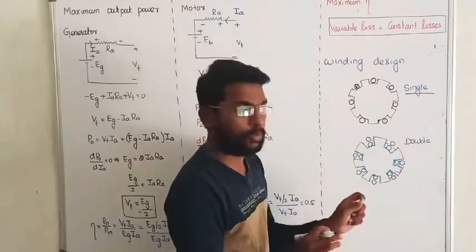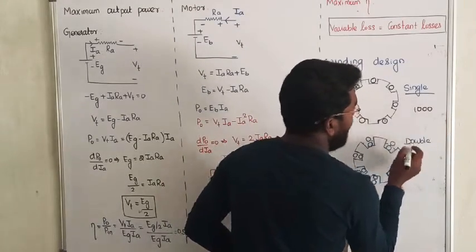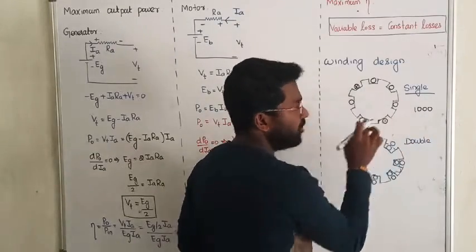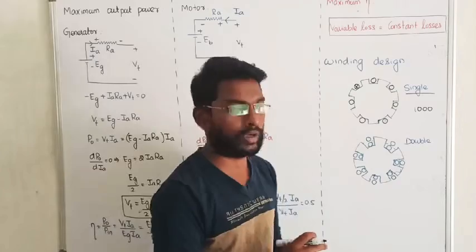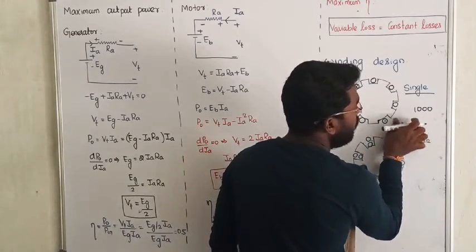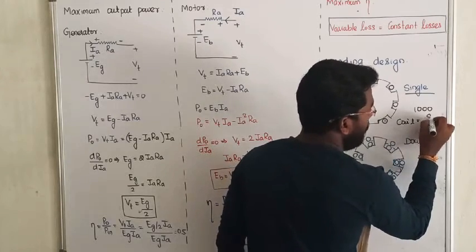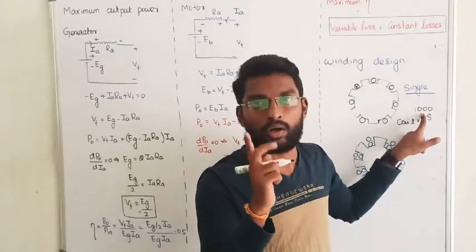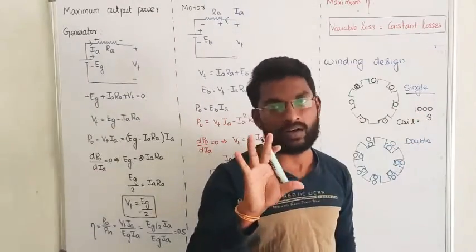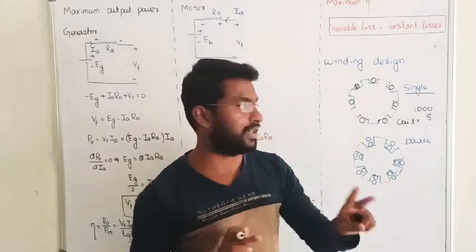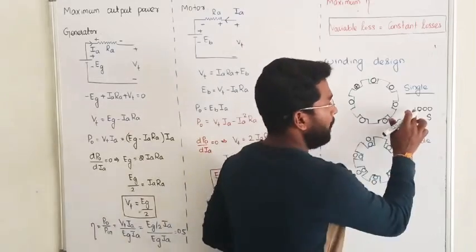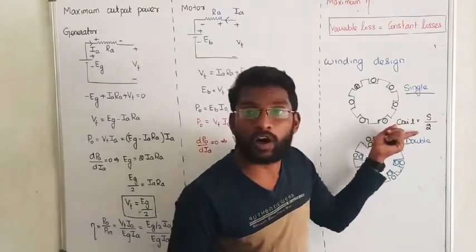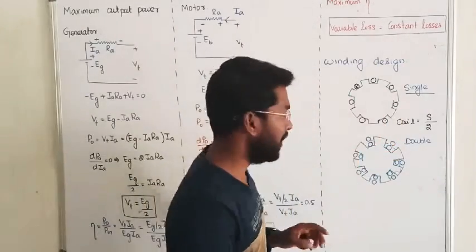In case of single layer winding, suppose you have 1000 conductors — one conductor per slot, so 1000 slots. Total number of conductors equals number of slots. Since one turn requires two conductors, 1000 conductors give 500 turns. So in single layer winding, the number of turns equals half the number of conductors, or equivalently half the number of slots. Number of coils equals number of turns equals total number of slots divided by 2.